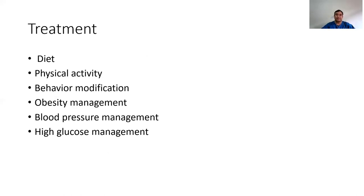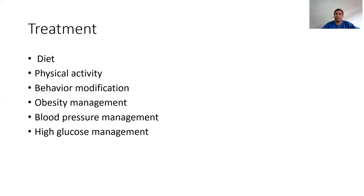For treatment, if someone is obese, diabetic, or hypertensive, we have to counsel our patient regarding diet — always recommend more fruits, more vegetables, and less carbohydrates and fat. Always counsel them to do physical activity and exercise. We have to recommend behavioral modification: avoiding junk food, beverages, alcohol, and smoking. If the patient is obese, we have to manage the obesity, and we also have to manage blood pressure and high glucose.